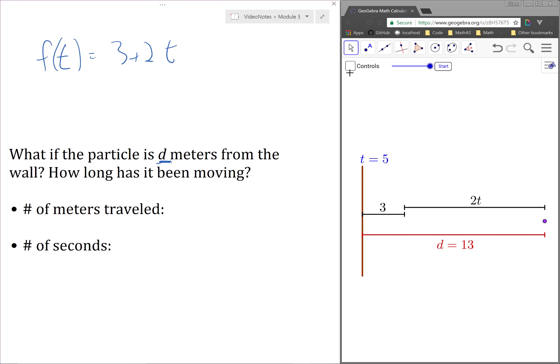Let's think about this using our diagram. So suppose we know that the particle is d meters away from the wall, and we want to know how long it's been moving. First of all, the distance the particle has traveled since it started moving is going to be equal to d minus 3.